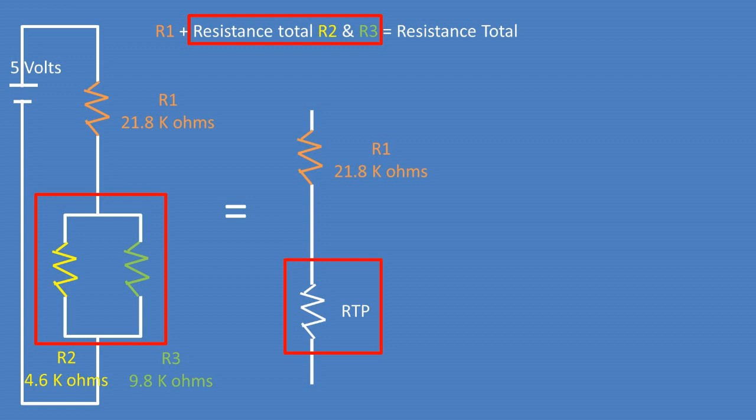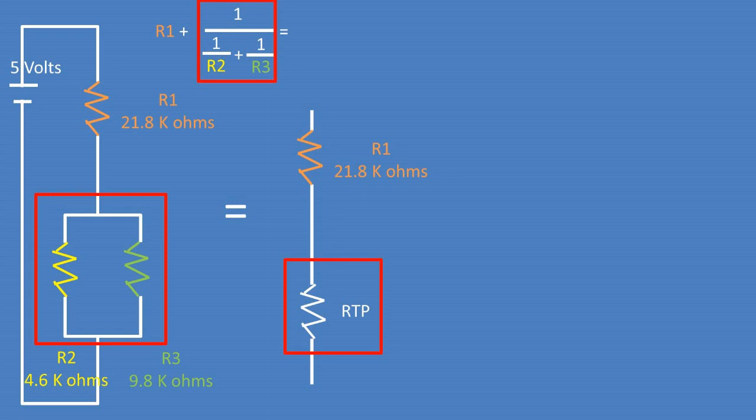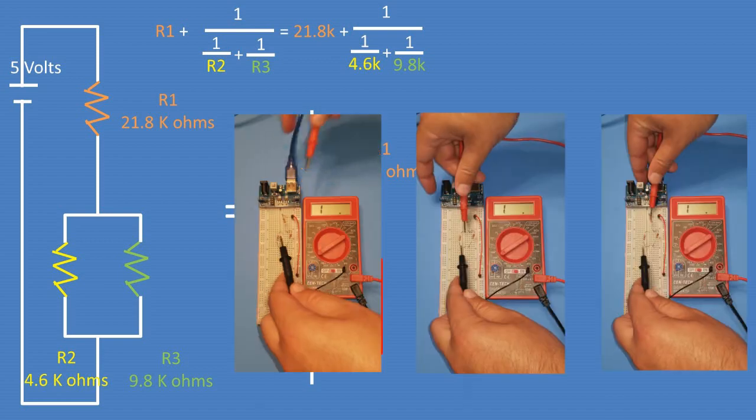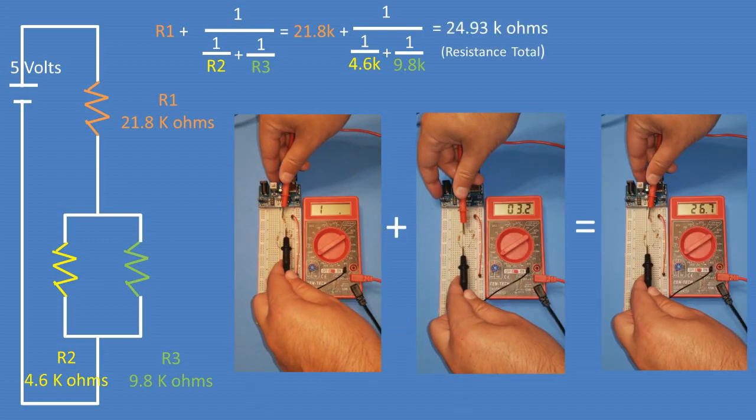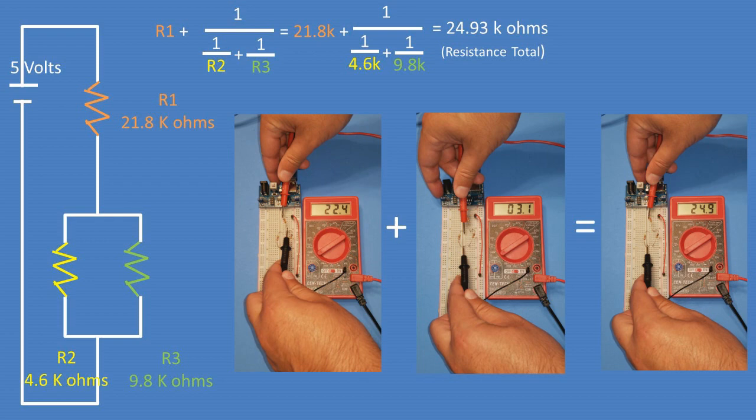That being said, we can take the resistance 1 plus the resistance total of the parallel portion of the circuit to get the total resistance. The resistance total of the parallel portion can be found by taking 1 over parentheses, 1 over resistance 2 plus 1 over resistance 3 parentheses. We can now plug in the resistances into the formula. After plugging in the formula into our calculator, we get a total resistance of 24.93 kOhms.